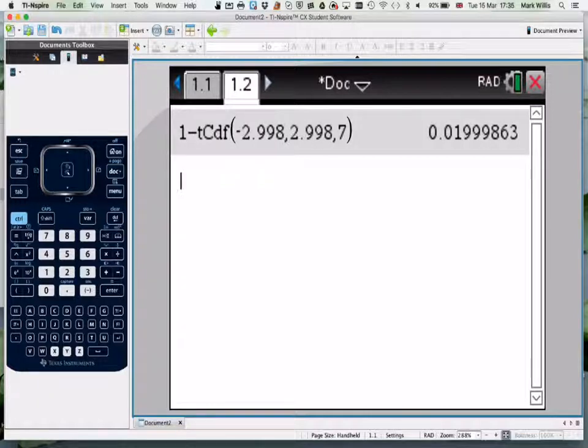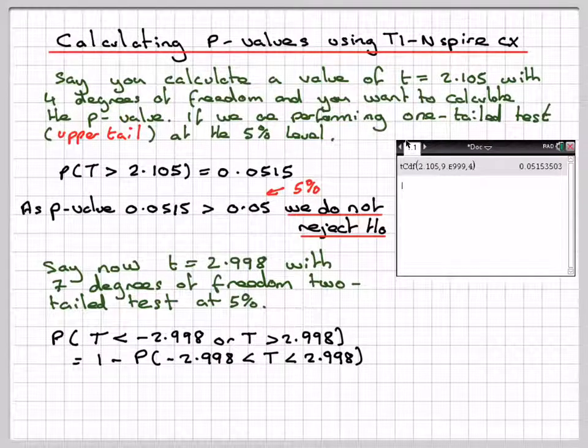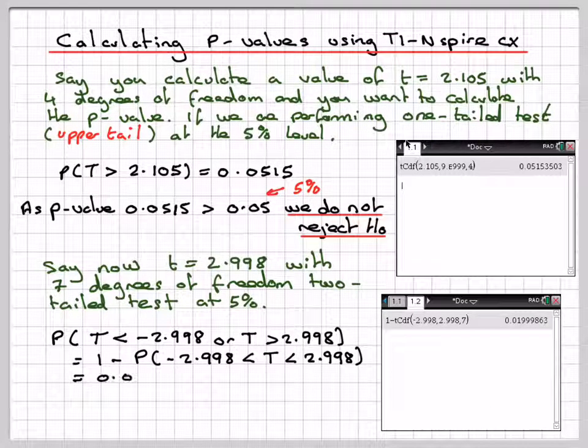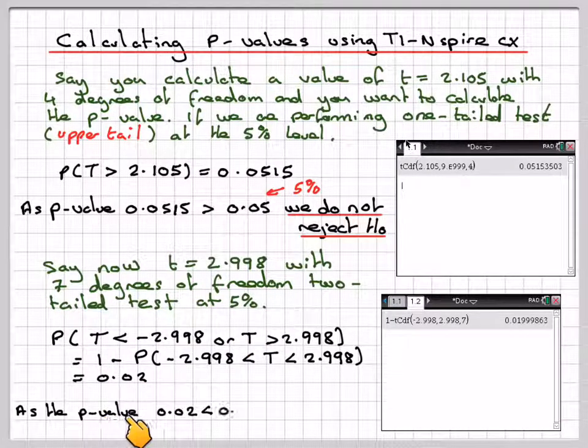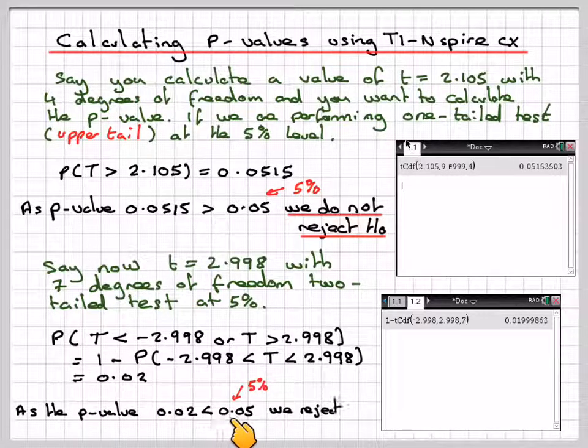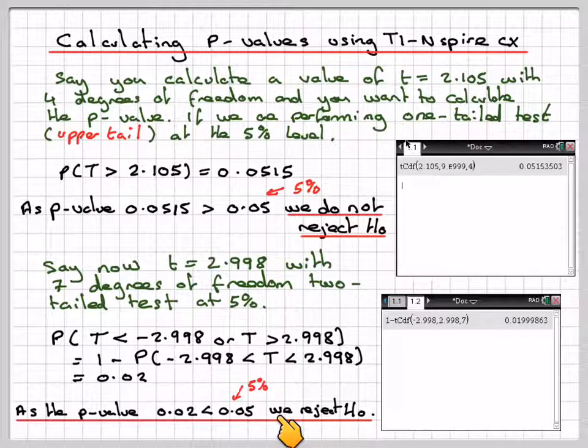That will be the p-value for that particular test. Rounding it off, it's 0.02. We had the test at 5%, so as the p-value 0.02 is less than 0.05, we reject H₀. The final case will be like this.